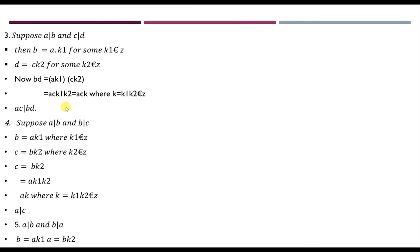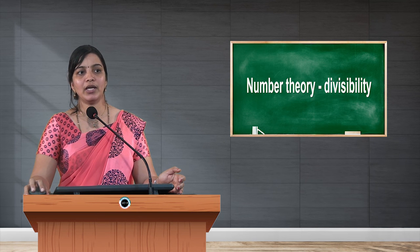For condition 4: a divides b means b = a·k₁ where k₁ is an integer; b divides c means c = b·k₂ where k₂ is an integer. Substituting b = a·k₁ into c = b·k₂ gives c = a·(k₁k₂) = a·k. Since k₁ and k₂ are integers, k = k₁k₂ is an integer, so a divides c.